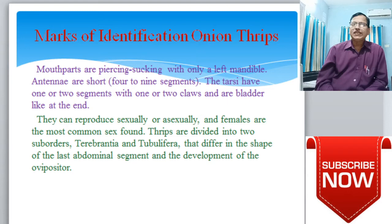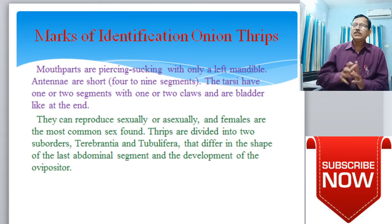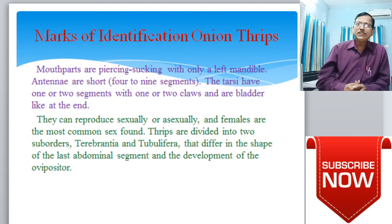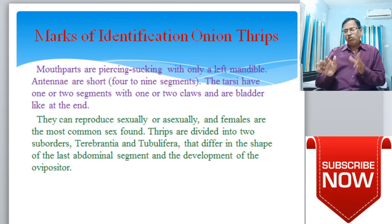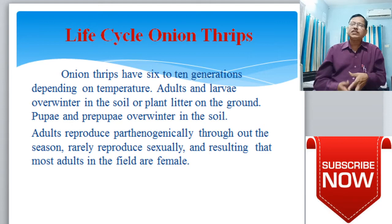Tarsi have one or two segments with one or two claws and a bladder-like structure at the end. They can reproduce sexually or asexually, and females are the most common sex found. Thrips are divided into two suborders — Terebrantia and Tubulifera — which differ in the shape of the last abdominal segments and development of the ovipositor. These are the marks of identification.